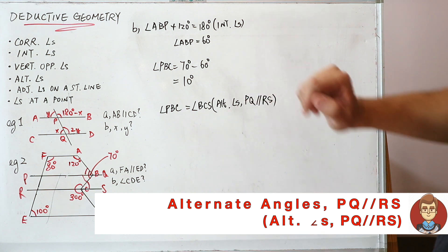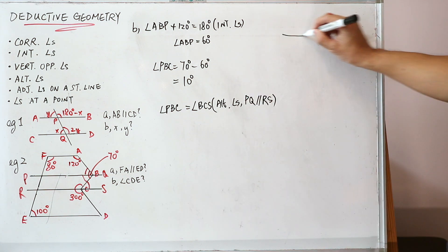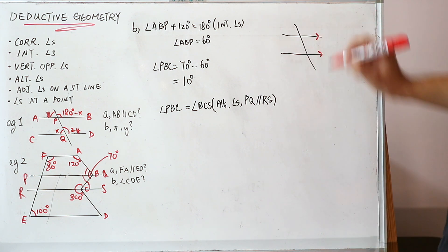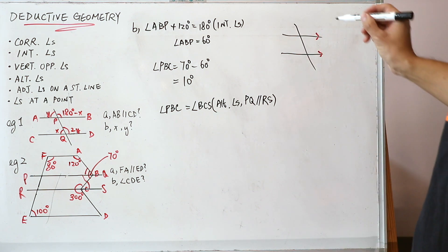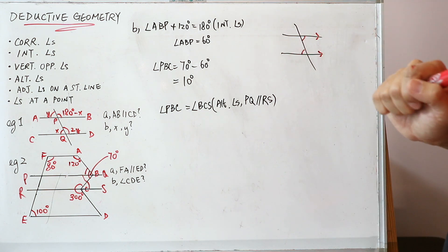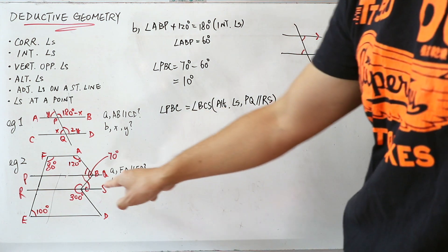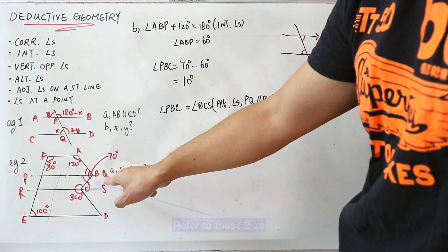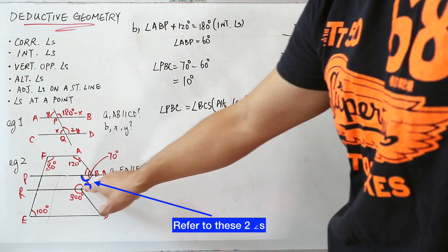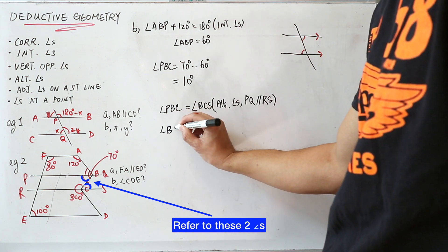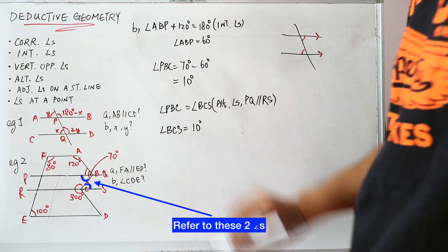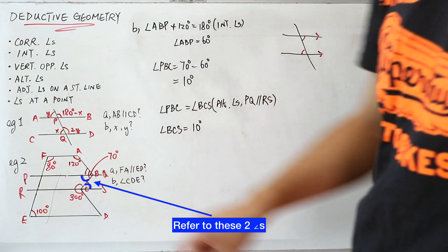For those who don't know what alternate angles means: if two lines are parallel and a transversal crosses them, this angle equals that angle — the reason is alternate angles. So angle PBC equals angle BCS, meaning angle BCS equals 10 degrees.